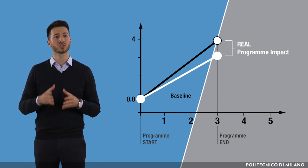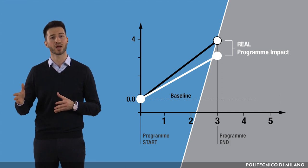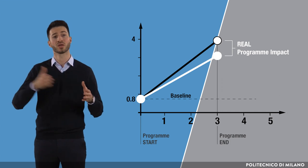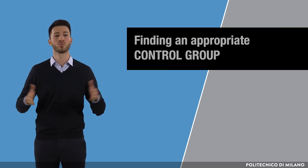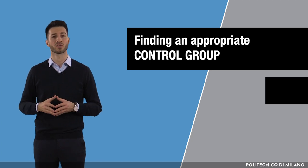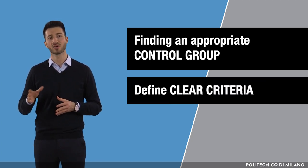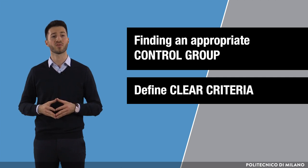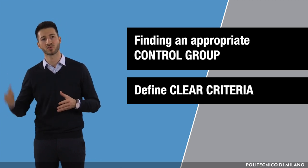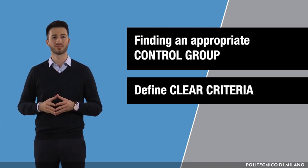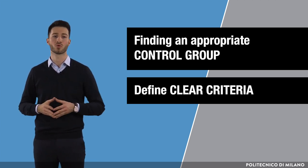We managed to accomplish this by including the explanatory variable in our econometric model, which is a binary indicator that discriminates the startups funded by the program from the control group. Finding an appropriate control group is not straightforward, though. One needs to define clear criteria to do that. For instance, we should find startups that have very similar characteristics to the startups funded by the program, in terms of founders' characteristics, age, size, industry, etc. The only difference should be the participation in the program.